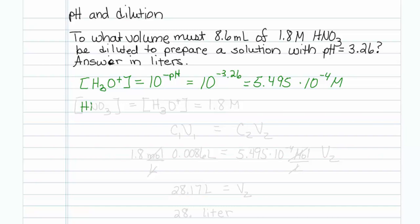Now nitric acid is a strong acid, so putting nitric acid in water means you are being given the hydronium concentration. The hydronium concentration of the original solution is 1.8 molar. We can use the dilution formula: C1V1 equals C2V2.